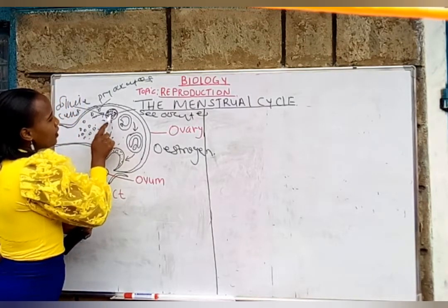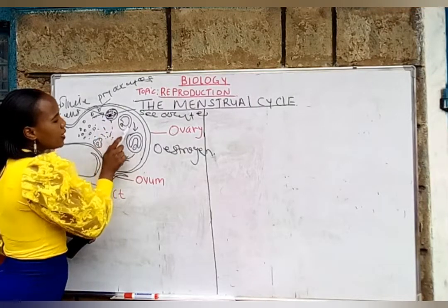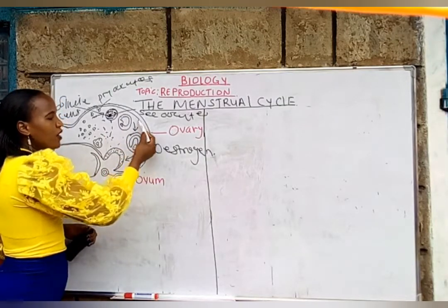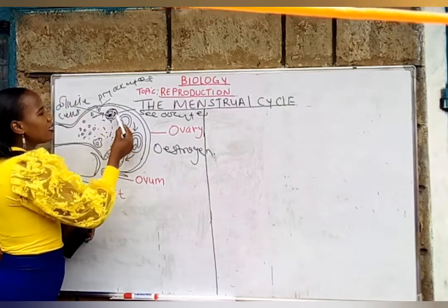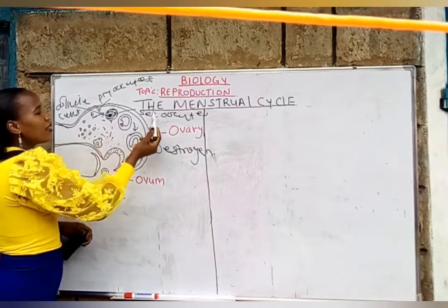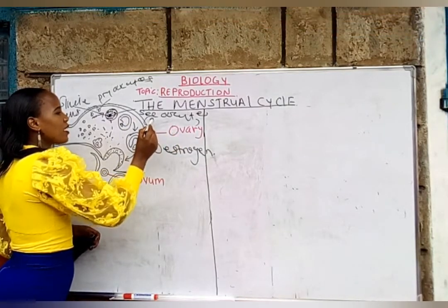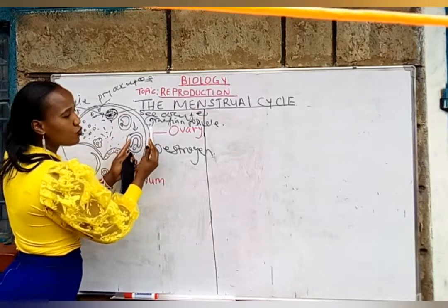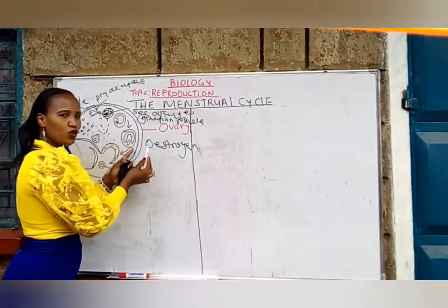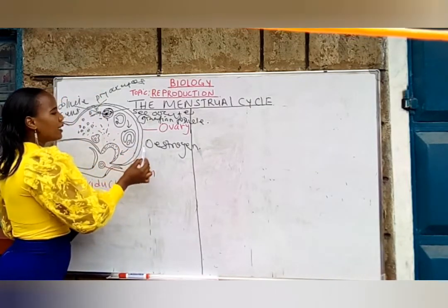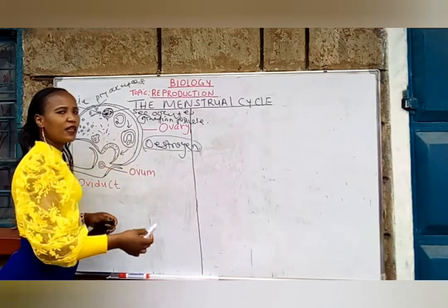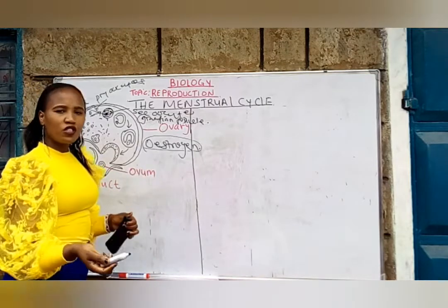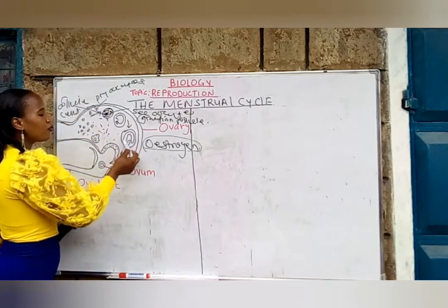As the secondary oocyte matures, it moves to the walls of the ovary. Remember, after it has developed and is surrounded by follicle cells, that stage is referred to as the Graafian follicle. It moves to the walls of the ovary and causes the walls to bulge out. As the concentration of estrogen increases even further, the concentration of luteinizing hormone is also increased, and the Graafian follicle bursts.